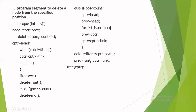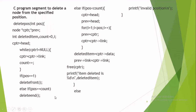Once we reach the node at the specified position, we copy its data to deleted_item by writing deleted_item = CPTR data. Then we update the previous node link part to the current node's link — prev link = CPTR link — which bypasses the node to be deleted, as we discussed in the deletion steps. Next, we deallocate the memory allocated for the current node by calling free(CPTR). Finally, we print the deleted item. If the specified position is not less than count, the position is invalid, and we prompt the user with an invalid position message. This completes the C function to delete a node from the specified position.